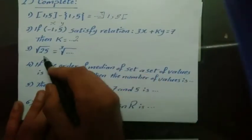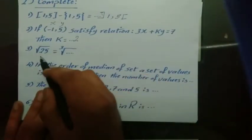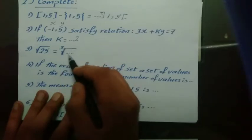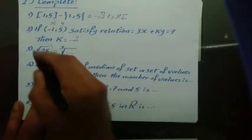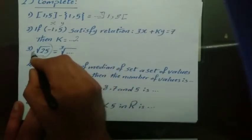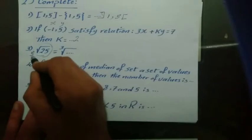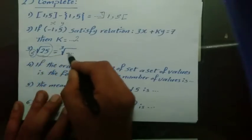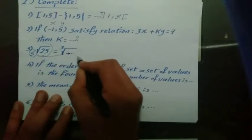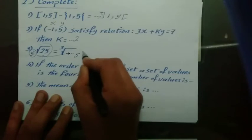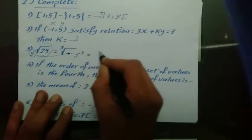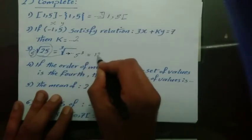Question 3: Square root of 25 equals the cubic root of what? Square root of 25 equals 5. So 5 inside the cubic root becomes 5 to the power 3, which equals 125. Therefore the answer is the cubic root of 125.